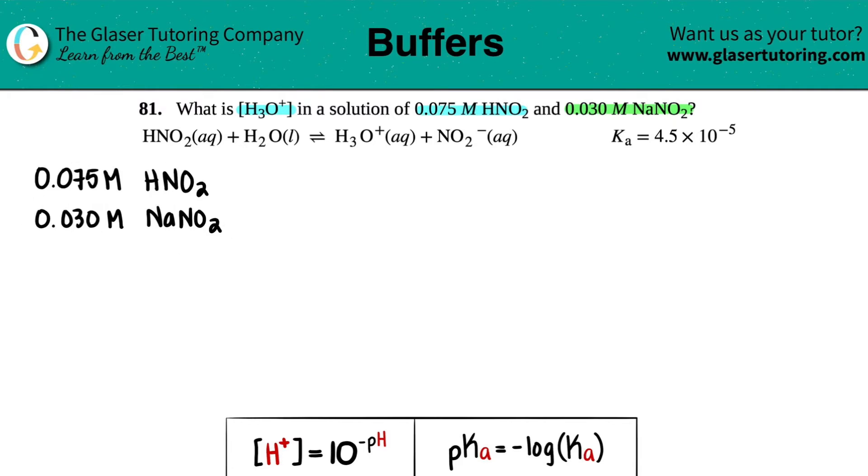So in this case, we have HNO2, right? And I know that HNO2, there's an H in front of it, so this has to be an acid. So I'm just going to put that this is an acid and it's a weak acid. HNO2 is not one of my six strong acids. So it's a weak acid.